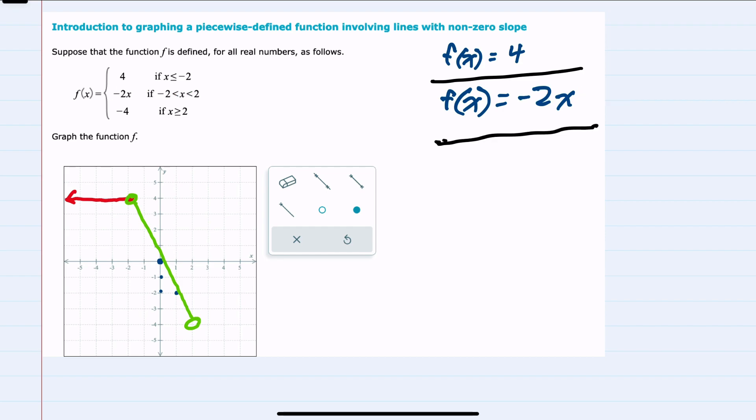Leaving us with the last portion, where f of x is equal to negative 4. So this is again a horizontal line, this time through y equals negative 4. And the piecewise portion is just for the values of x for 2 and greater.